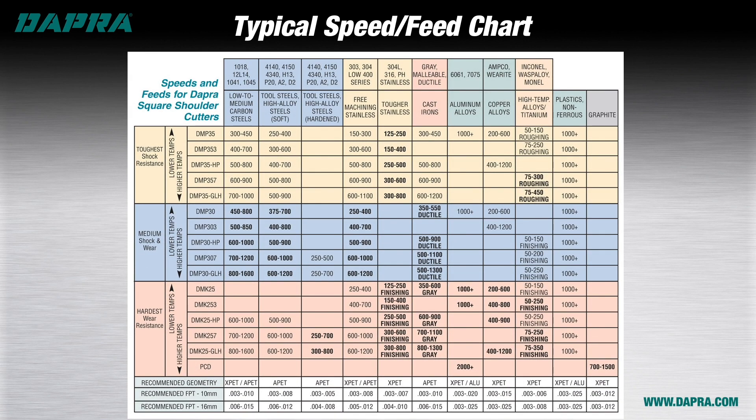Here we have an example of a typical speed and feed chart that you'll see in many cutting tool catalogs. This chart shows general operating ranges for a variety of materials, but without knowledge of what the numbers mean, they're really not much help. In the following slides, we'll discuss exactly what these numbers mean so that you'll be ready to translate them into useful speeds and feeds for your milling program.